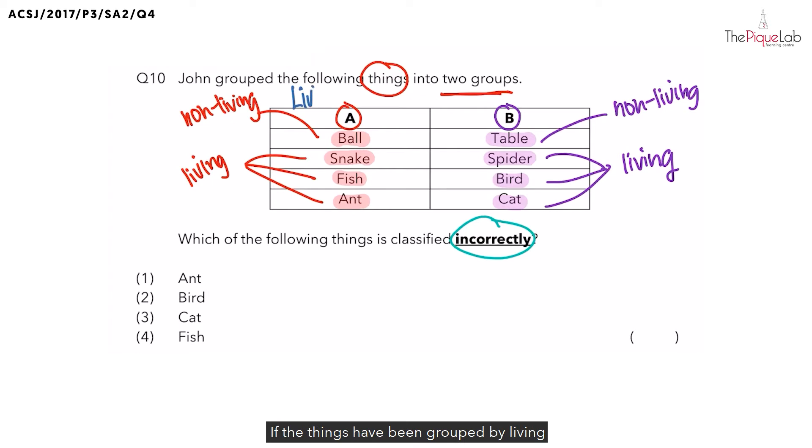If the things have been grouped by living and non-living things, you would realize that for group A, the ball is the one that is incorrect, because the ball is non-living. And in group B, you would realize that the spider, bird, and cat are living things, so they have been incorrectly grouped as well.